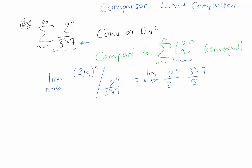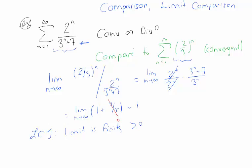When I clean that up, I see some nice things cancel, and this looks like the limit as n goes to infinity of 1 + 7/3^n. As n gets very big, that term gets very small, so my limit here is just 1. The limit comparison test says that because the limit is finite and greater than 0, both series are going to converge or both are going to diverge. So because the geometric series converges, our original series converges as well. We can do this using either the limit comparison test or just the plain old comparison test — the comparison test was a little bit easier.